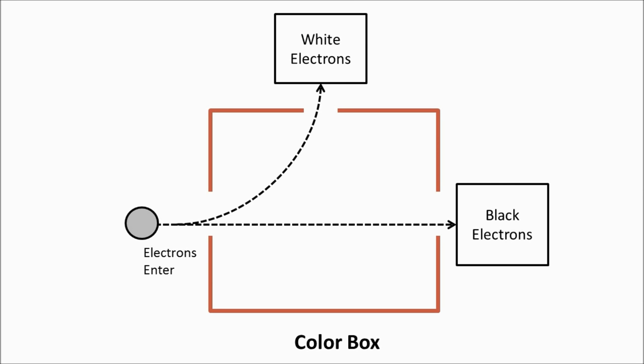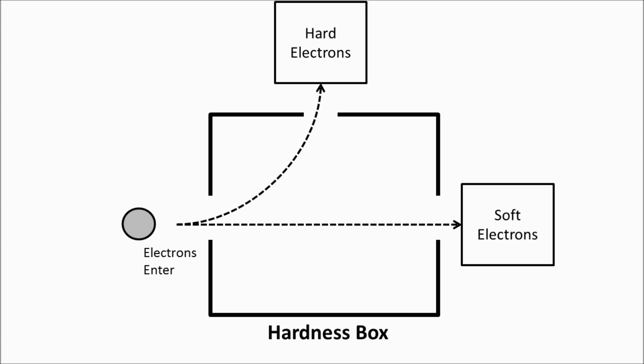So how do you know whether an electron is white or black? Scientists use an instrument that I'm going to call a color box. If you send an electron into a color box, there are two holes it can come out of — a white hole or a black hole. Any electron that comes out of the white hole is a white electron, and the electron that comes out of the black hole is a black electron. Similarly, a hardness box measures hardness: there's a soft hole and a hard hole.